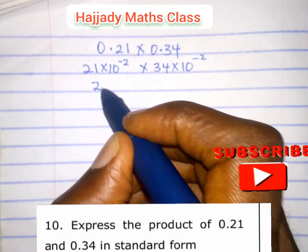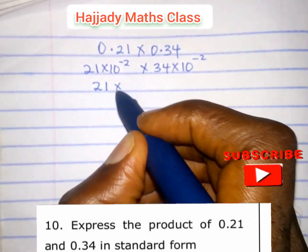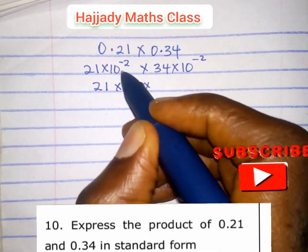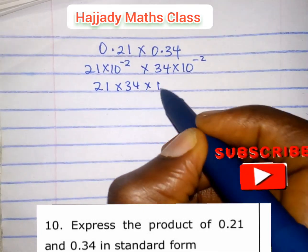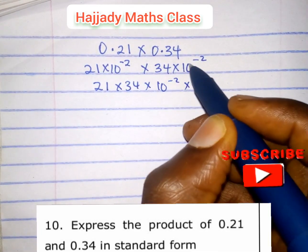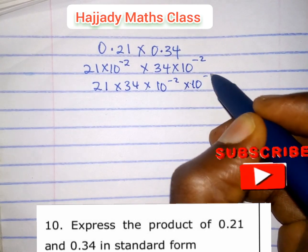Multiplying this separately, we have 21 times 34 times 10 raised to the power minus 2 times 10 raised to the power minus 2.